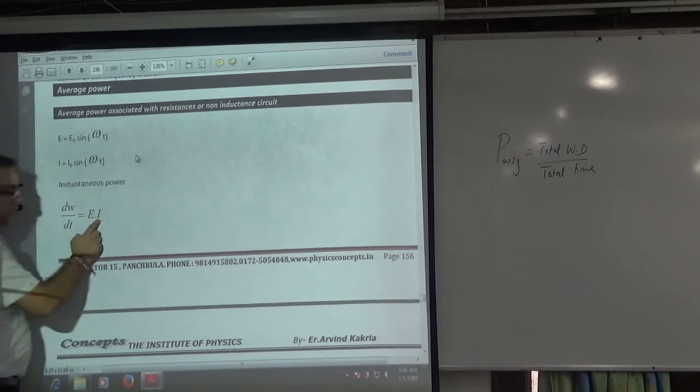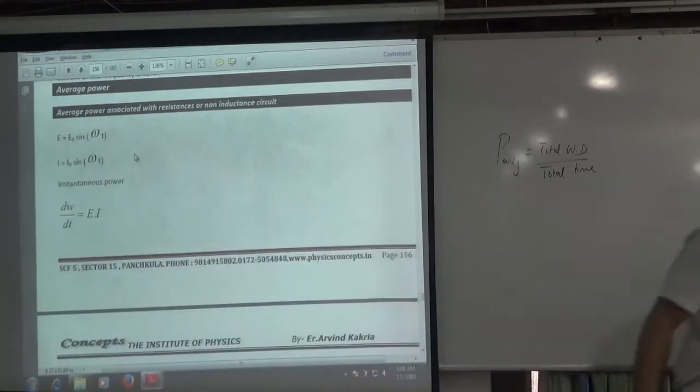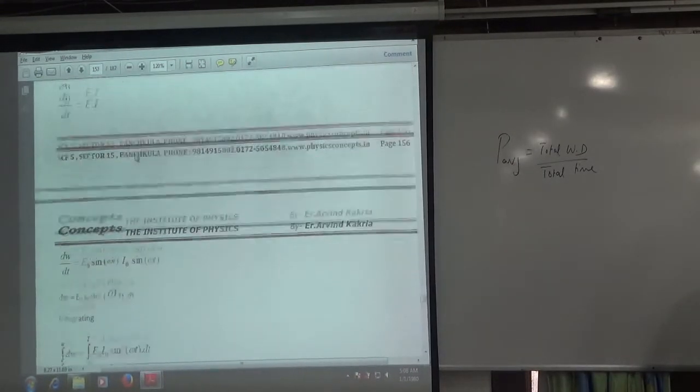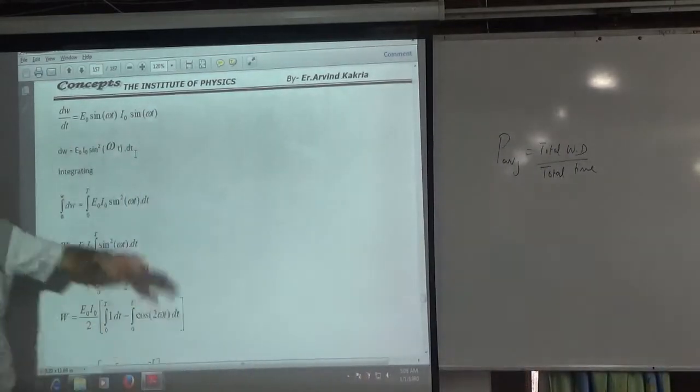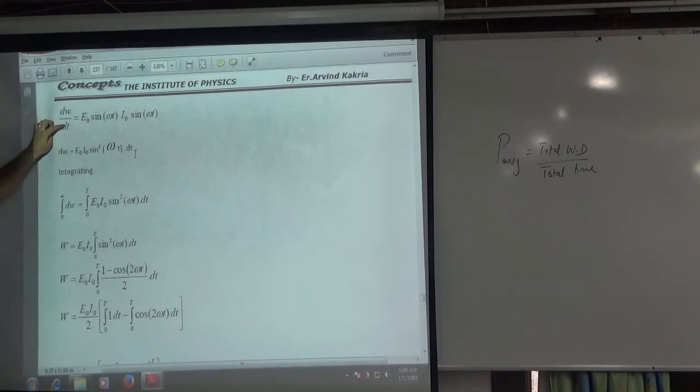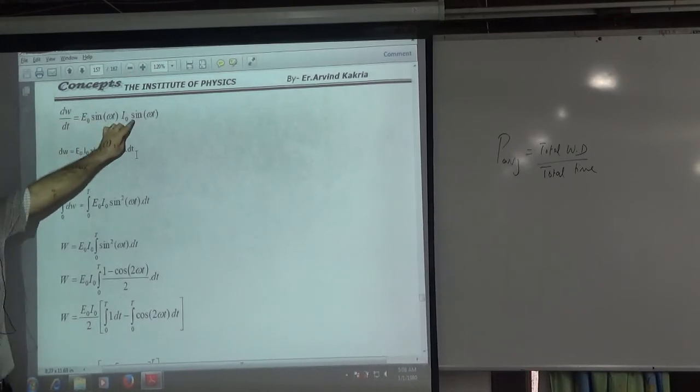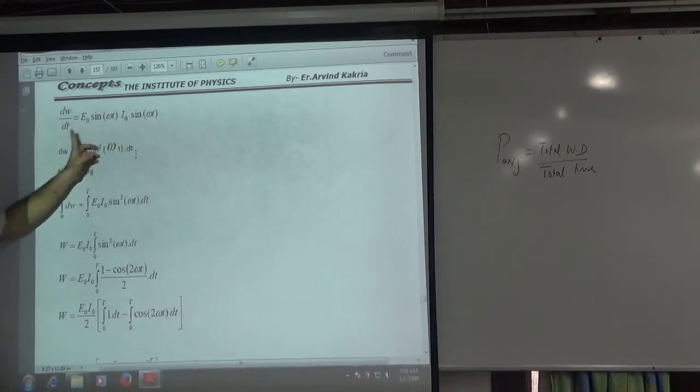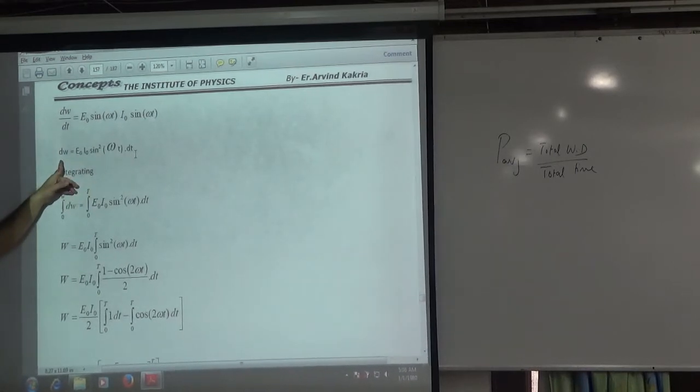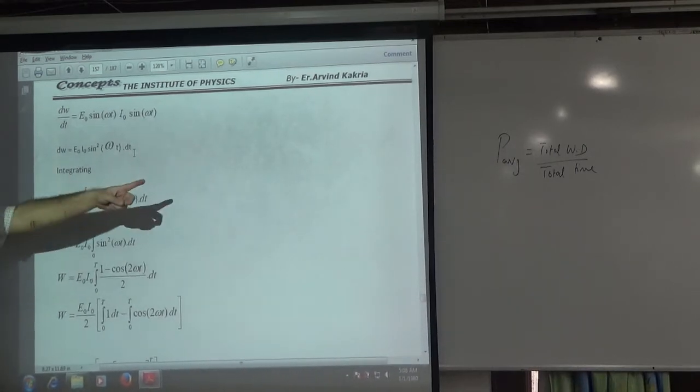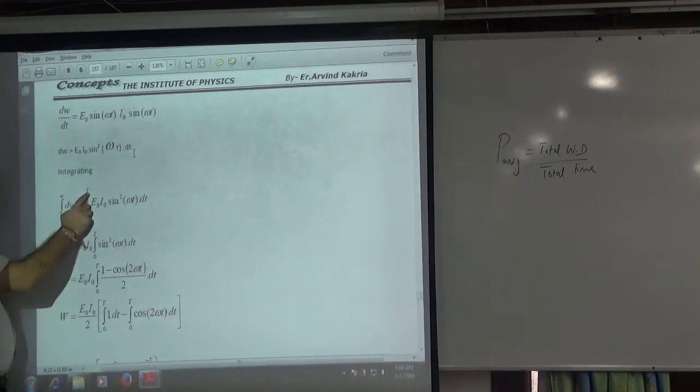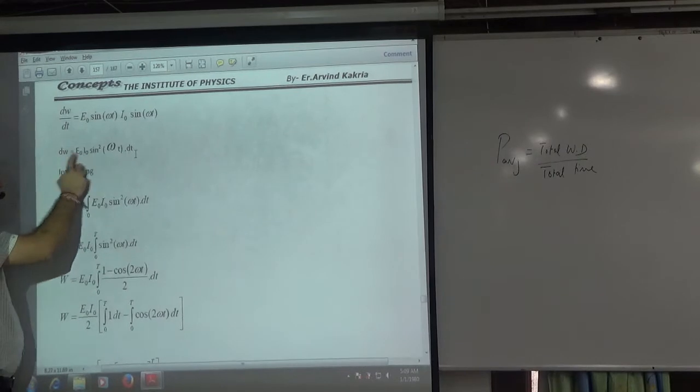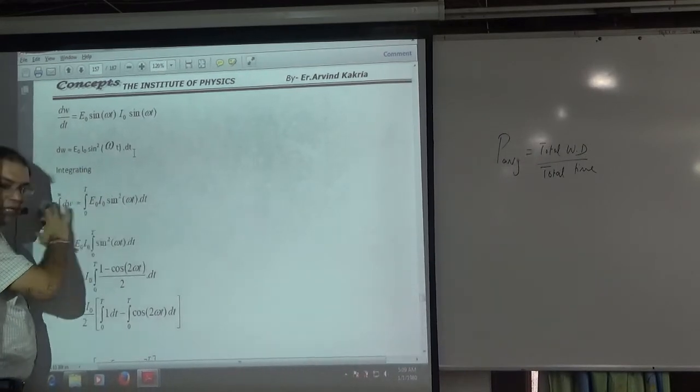So, let's do a work. In E and I, we put E0 sin omega t. I put I0 sin omega t. What is instantaneous power? dW by dt. What is E0 sin omega t into I0 sin omega t. Dt went on right side. Small work. But, what do I need for average power? Total work done. And, for how long? For zero to t. So, for total work done, for both sides of the integration.